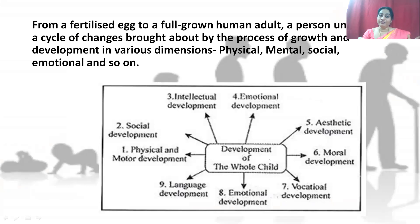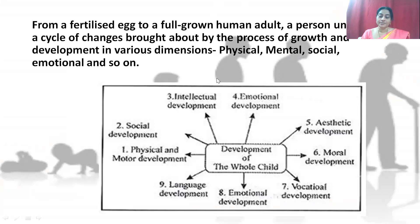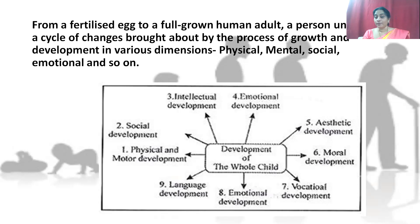From a fertilized egg to a full-grown human adult, a person undergoes a cycle of changes brought about by the process of growth and development in various dimensions. When you observe this flowchart, you can see dimensions like physical development, motor development, social development, intellectual development, emotional development, aesthetic development, moral development, and vocational language development. There are various dimensions you can observe in the development of the whole child.